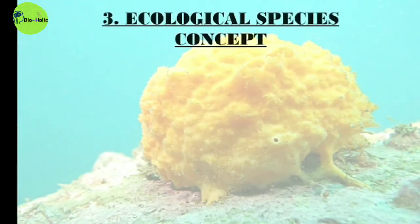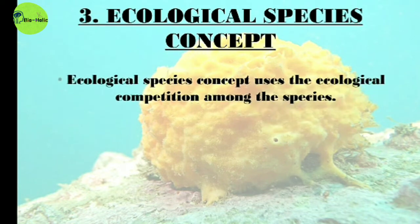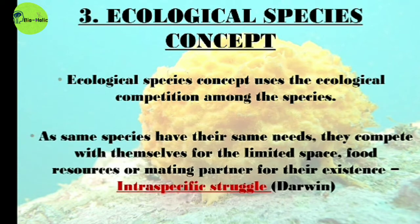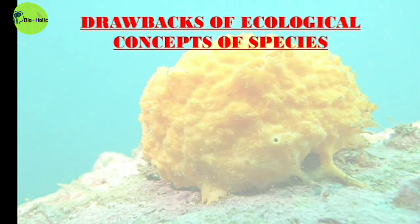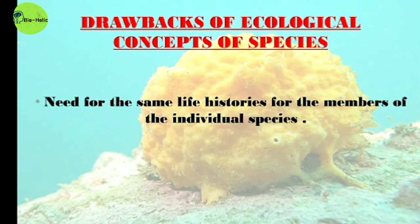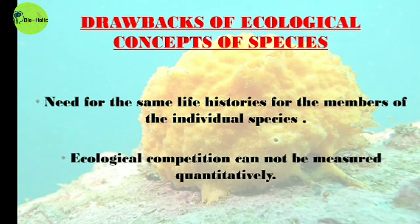The Ecological Species Concept uses ecological competition among species. Members of the same species share the same needs and compete with each other for limited resources like space, food, or mating partners — referred to as intraspecific struggle by Darwin. Drawbacks include the requirement for the same life history among members of a species, and that ecological competition cannot be measured quantitatively.